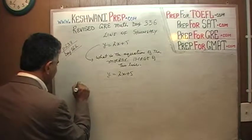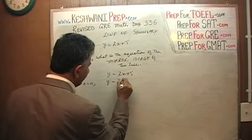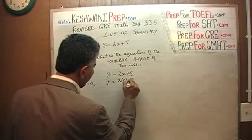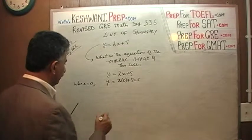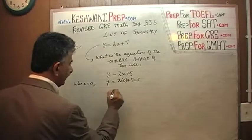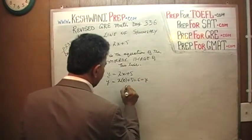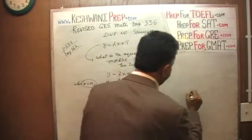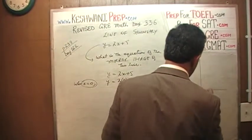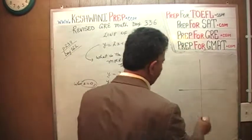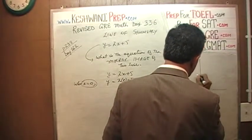When x is equal to 0, y is going to be 2 times 0 plus 5, so y is going to be 5. In other words, the line goes through the point (0, 5). That's x equals 0 along the y-axis, so the y-intercept is at (0, 5).